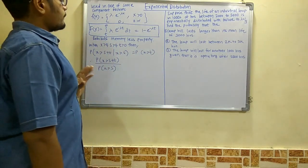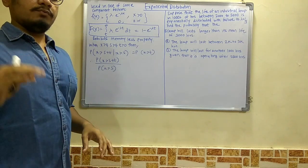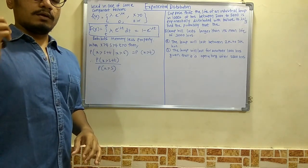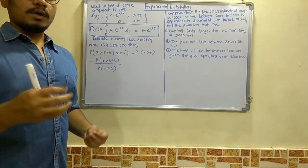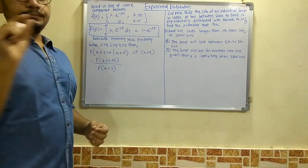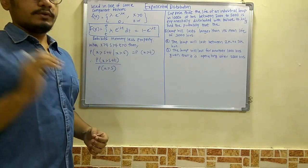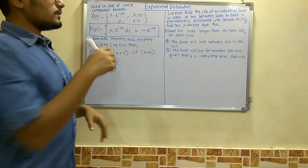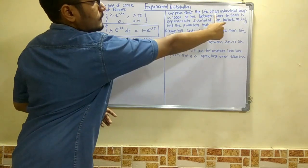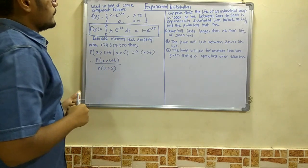First of all, exponential distribution is mainly used to solve cases where there is a failure in some manufacturing or there is some defect in a product. Whenever in a problem you encounter that a failure rate or failure defect is present, that is a key indicator it is based on exponential distribution. This is also how to differentiate between exponential and Erlang distribution — in exponential, you specifically have failure rate as a characteristic.